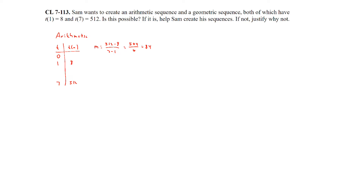That gives us 504 divided by 6, so the slope is 84. Using the point (1, 8) and slope 84, we solve: 8 equals 84 times 1 plus b, giving us b equals negative 76. So the arithmetic sequence equation is T(n) equals 84n minus 76.